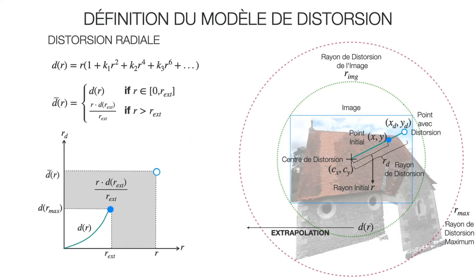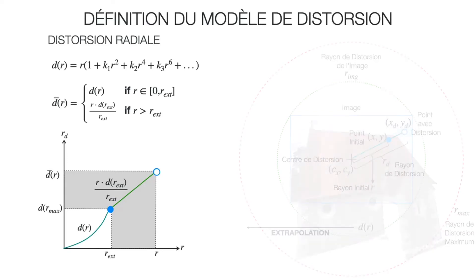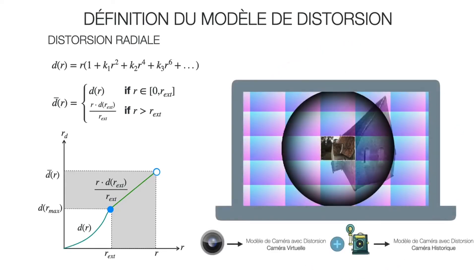We propose an alternative solution, using the approach of linear extrapolation to extend the definition of the distortion model to be defined in all existing domains where the function is continuous and non-decreasing. The extrapolation allows the user to visualize the context that is outside the limited domain of definition from the distortion model in the view camera.